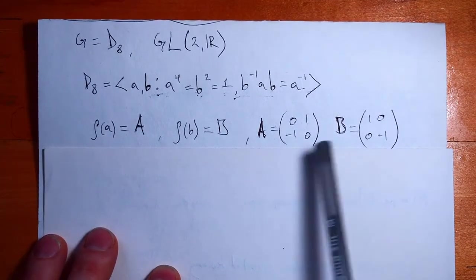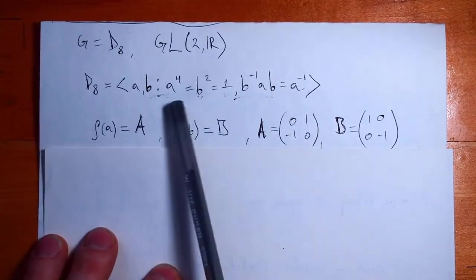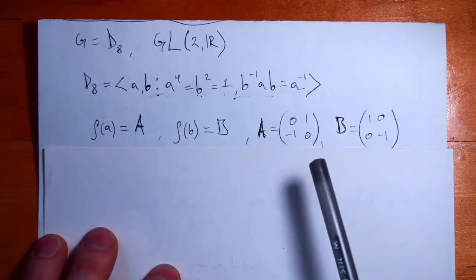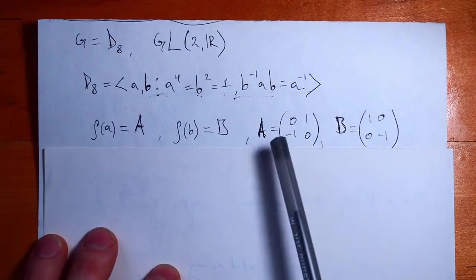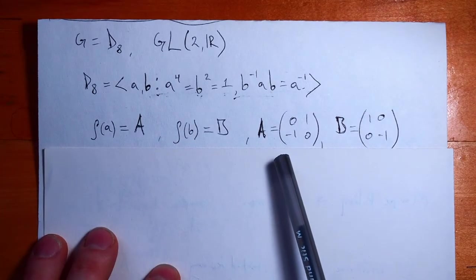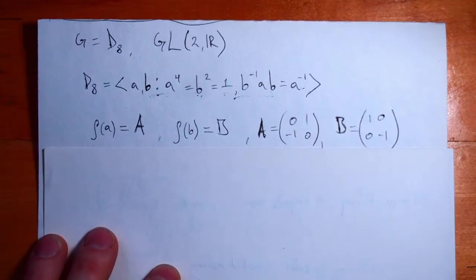Now if these two matrices satisfy these conditions, these equations, then these guys are generators of D8. And the group that they generate is going to be a copy of D8.